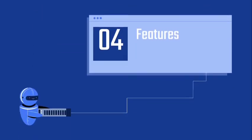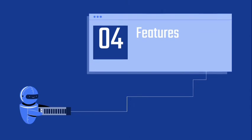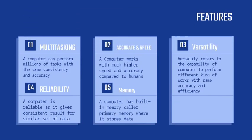The fourth is features. There are some features that computers have. One, multitasking. Second, accurate and speed. Third, versatility. Fourth, reliability. Fifth, memory.